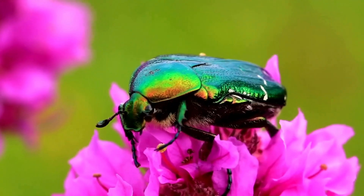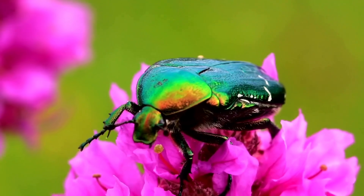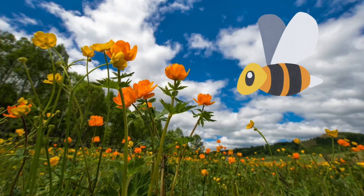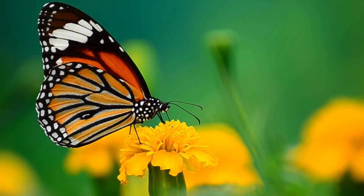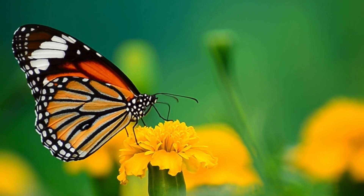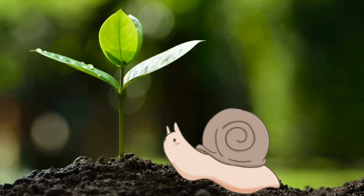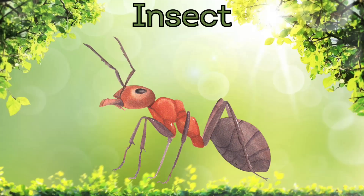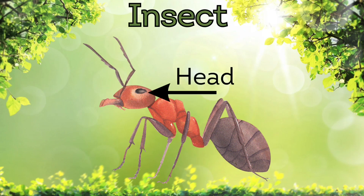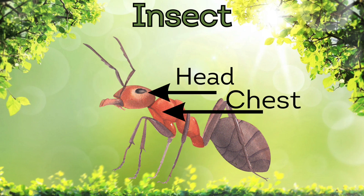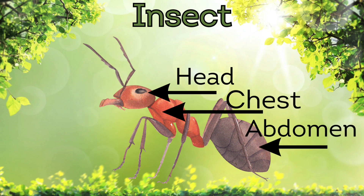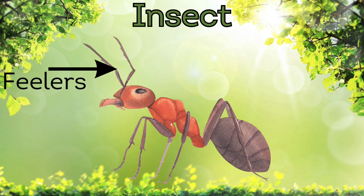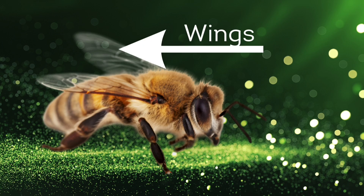In this video you will learn a little bit about bugs and insects. All insects are bugs, but not all bugs are insects. Insects have three main body parts: a head, a chest, and an abdomen. They have two feelers on the head and six legs on their chest. Some insects have wings.